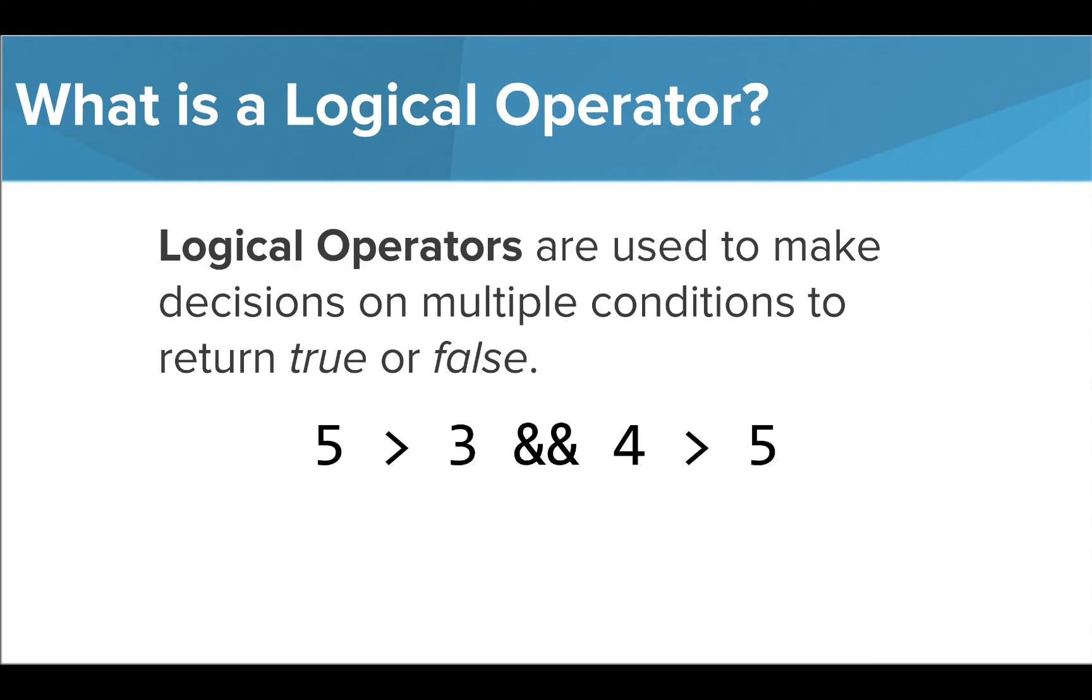For the AND operator to evaluate to true, both conditions must evaluate to true. In this case, 5 is greater than 3 and 4 is greater than 5. The first comparison, 5 is greater than 3, evaluates to true.